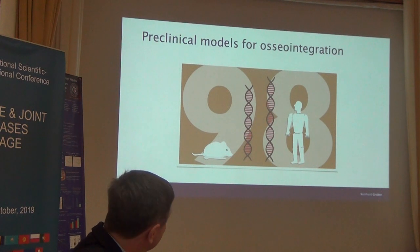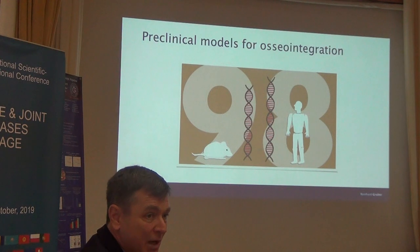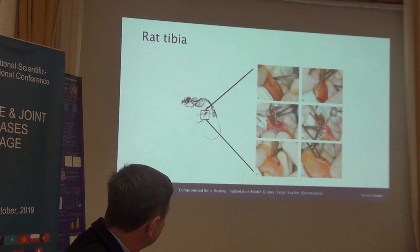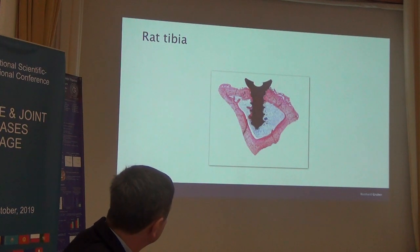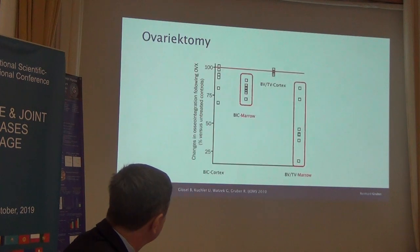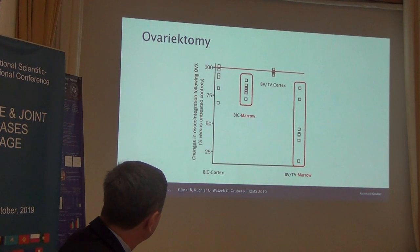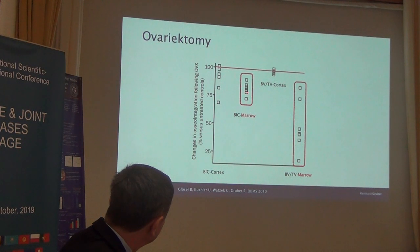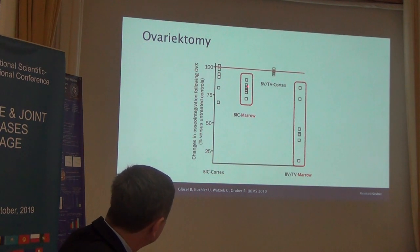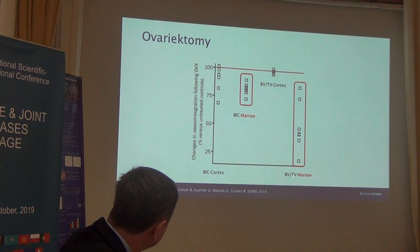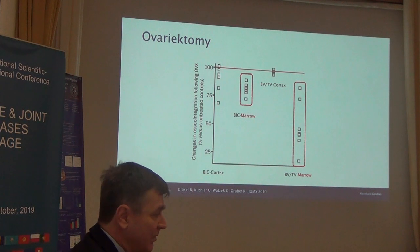We use ovariectomized rat models to study osseointegration. We place implants in the tibia and look at how much bone forms. Not surprisingly, after ovariectomy, the bone-to-implant contact in the marrow decreases compared to sham-operated controls, and bone volume-to-tissue volume in the marrow also decreases. So in the osteoporosis group you have less bone and less osseointegration.